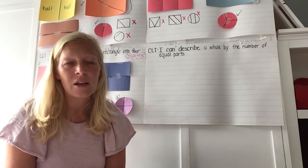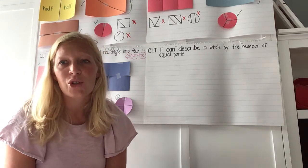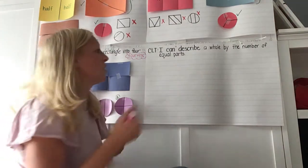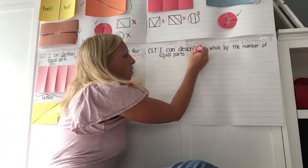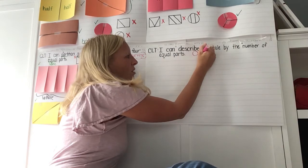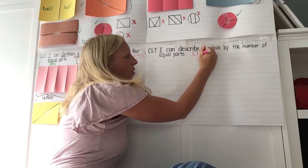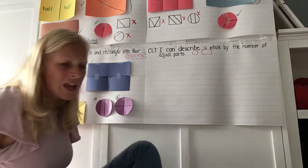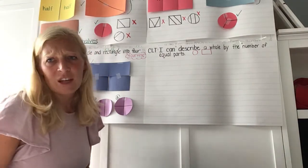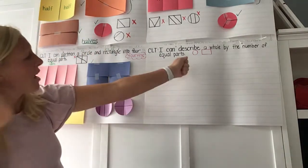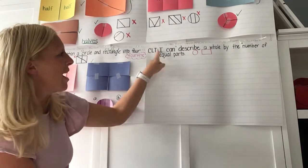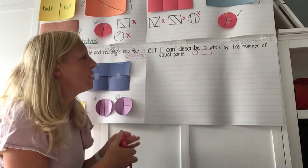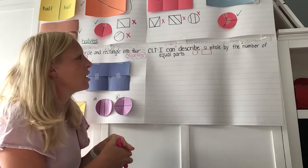Now, in second grade, we're focusing on our circles and our rectangles. So, as we see those this week, those are the ones we're focusing on — circles and rectangles. Let's go ahead and take a look at our target for today. We're really being very specific in our work today. I can describe a whole by the number of equal parts.